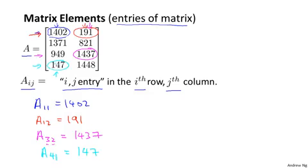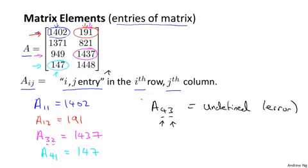But if you were to write, say, what is A43? Well, that refers to the fourth row and the third column. But this matrix has no third column. So this is undefined, or you can think of this as an error. There's no such element as A43.